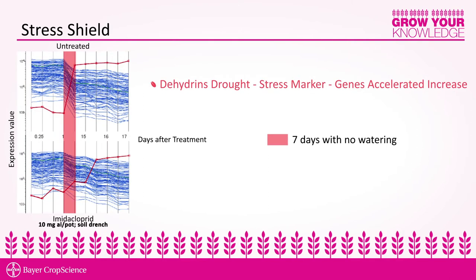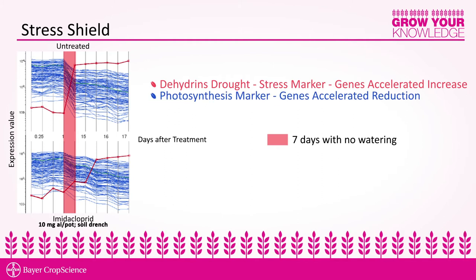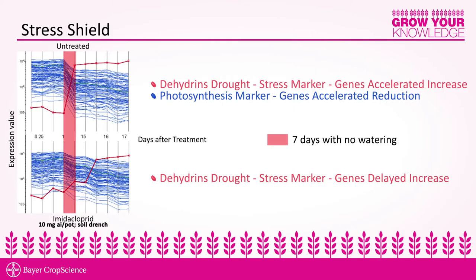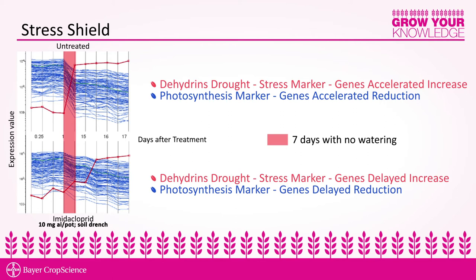Under drought stress, barley plants will produce a protein called dehydrin. We've been able to measure that under drought stress, barley plants treated with Stress Shield delay the production of these dehydrin proteins from seven days to 21 days. Another negative effect of drought on plants is a reduction in chlorophyll proteins, but we've been able to show that barley plants treated with Stress Shield actually maintain more chlorophyll protein versus untreated barley plants.